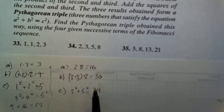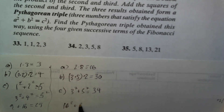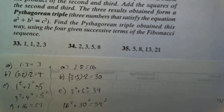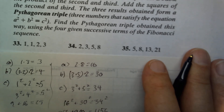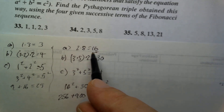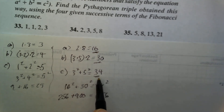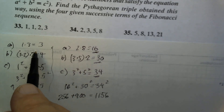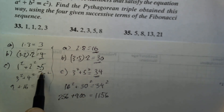We have a Pythagorean triple: 16, 30, and 34, because 16 squared plus 30 squared equals 34 squared, and 256 plus 900 equals 1,156. These three numbers constitute a Pythagorean triple, just like 3, 4, and 5 in the previous example.